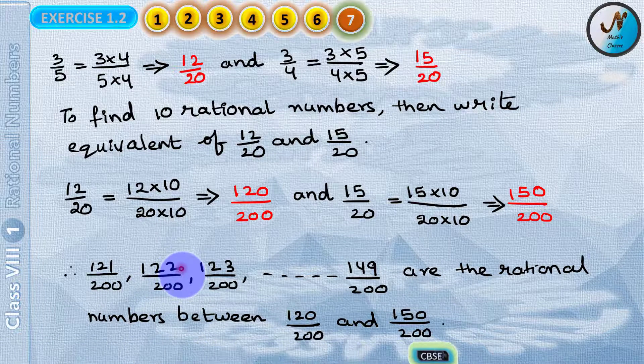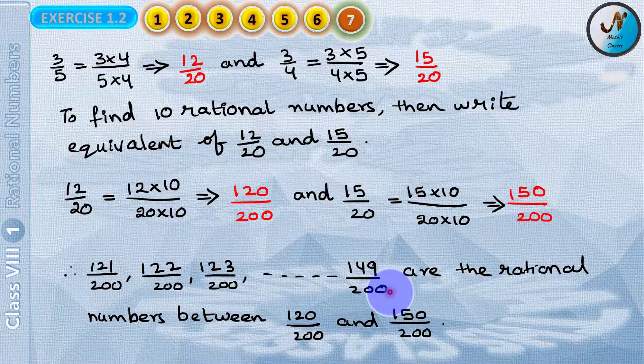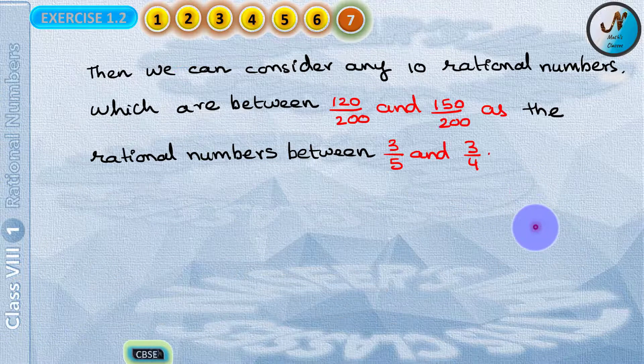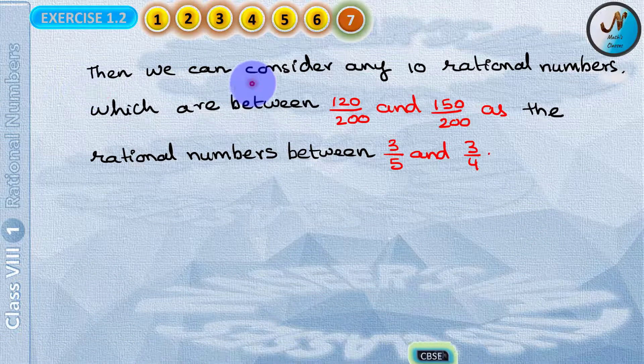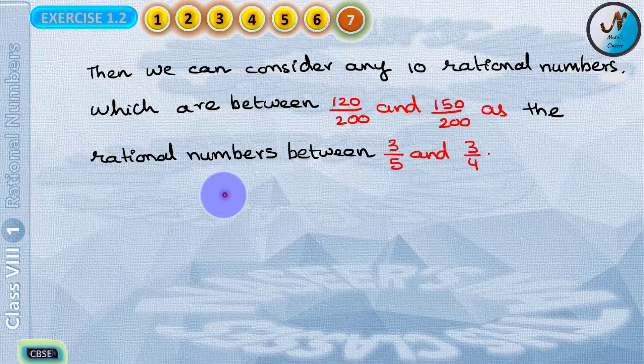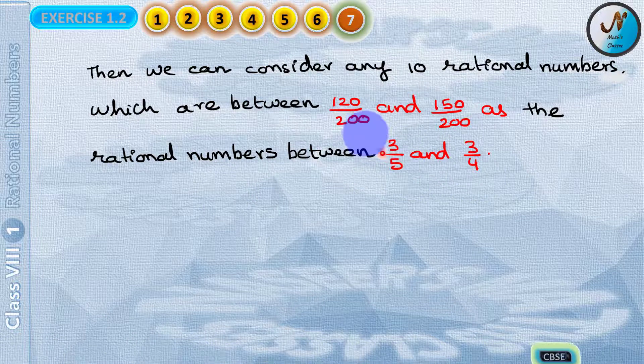Now we have 121 by 200, 122 by 200 and so on up to 149 by 200 as the rational numbers between 120 by 200 and 150 by 200. So then we can consider any 10 rational numbers which are between 120 by 200 and 150 by 200 as the rational numbers between 3 by 5 and 3 by 4.